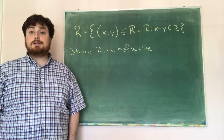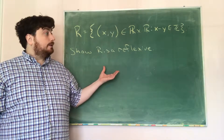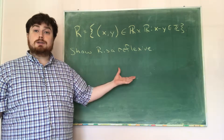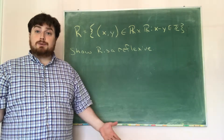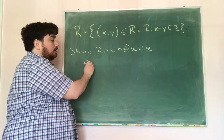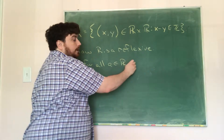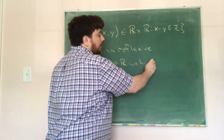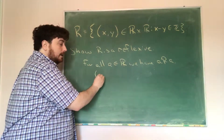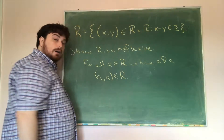Instead of trying to show that r is an equivalence relation all in one step, we're going to break it into portions, starting with showing that r is a reflexive relation. Reflexive means that for all a in the real numbers, we have that a is related to a, or that the ordered pair (a, a) is in the relation r.